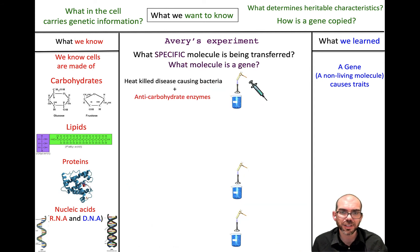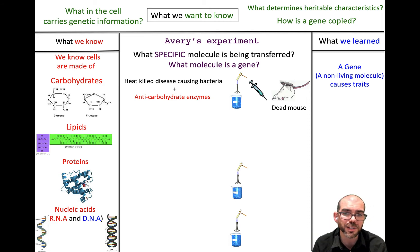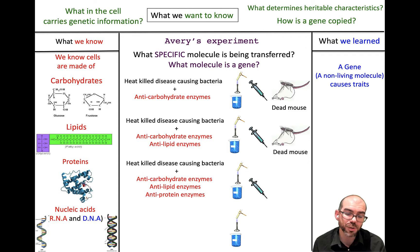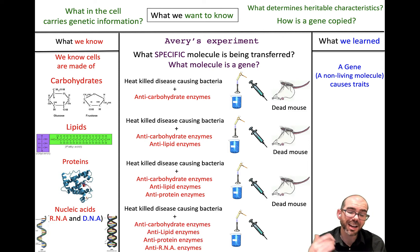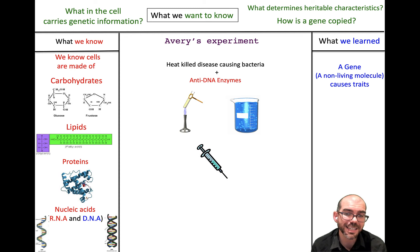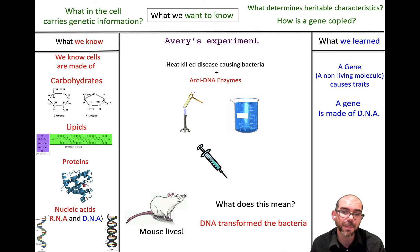Avery took the heat-killed disease-causing bacteria and added enzymes that destroy carbs — the mouse died, so carbs weren't the gene. He repeated with anti-lipid enzymes — dead mouse again. Anti-protein enzymes — dead mouse. Anti-RNA enzymes — dead mouse. That means it can't be a carb, lipid, protein, or RNA. Then he did the experiment with anti-DNA enzymes, and in that instance the mouse lived. That means the gene causing transformation has to be made of DNA, because only when you destroy DNA does the bacteria fail to transform.